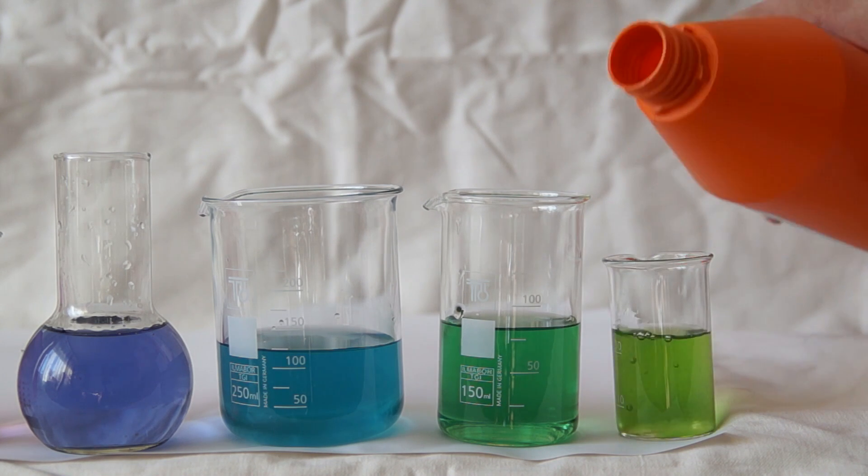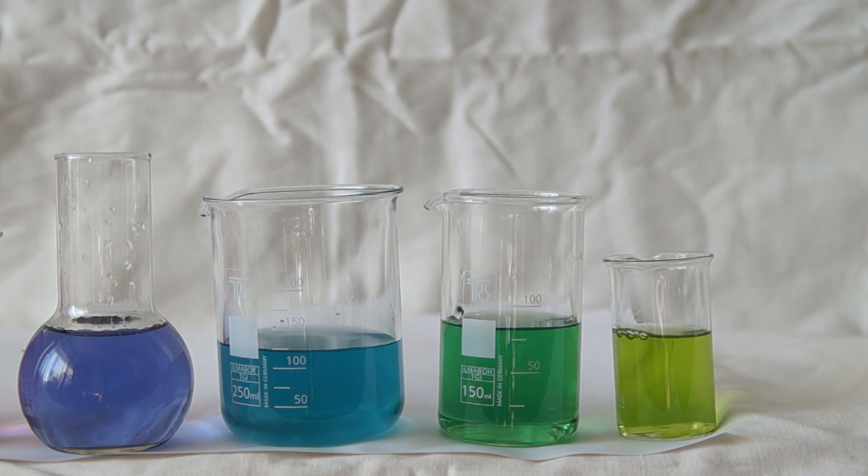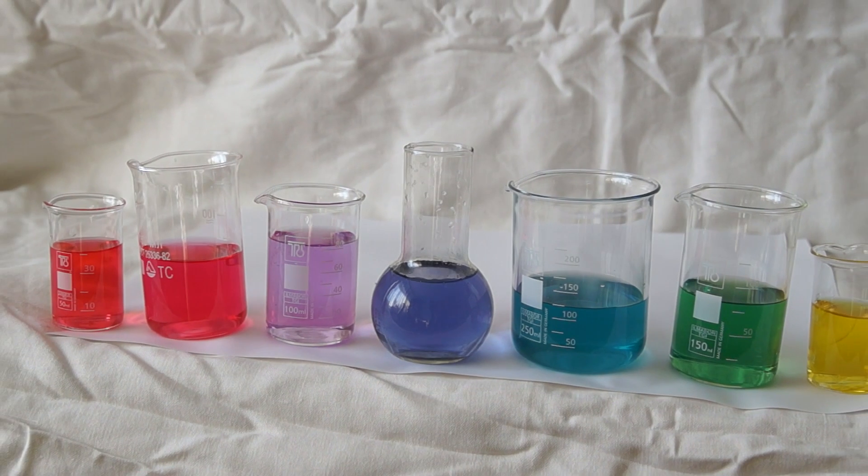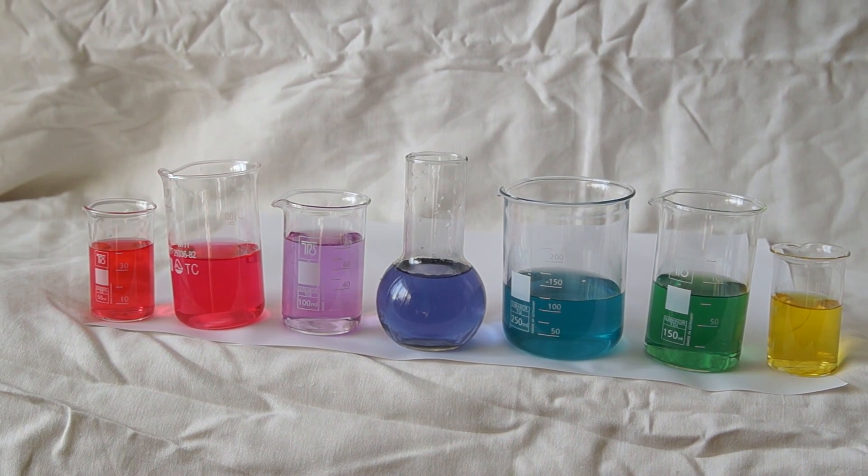Finally, in the last beaker, I will add a strong base, sodium hydroxide. The solution turns green at first and then yellow. Yellow indicates pH of about 14. Well, and we have got a diverse palette from one of the colors.